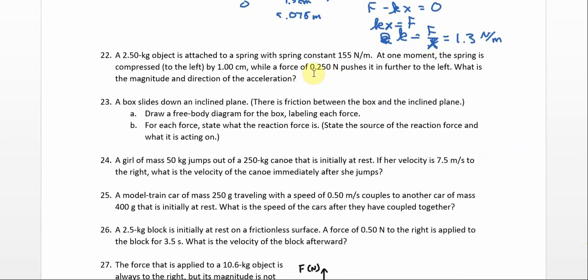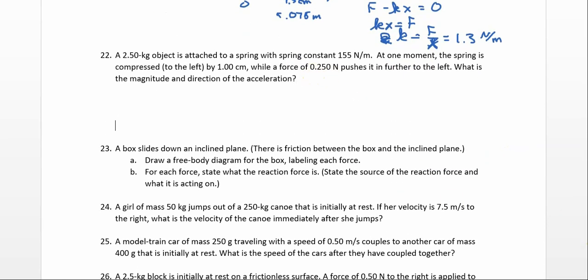Number 22. A 2.5 kilogram object is attached to a spring with a spring constant of 155 newtons per meter. At one moment, the spring is compressed to the left by one centimeter, while a force of 0.250 newtons pushes it further to the left. What is the magnitude and direction of the acceleration?